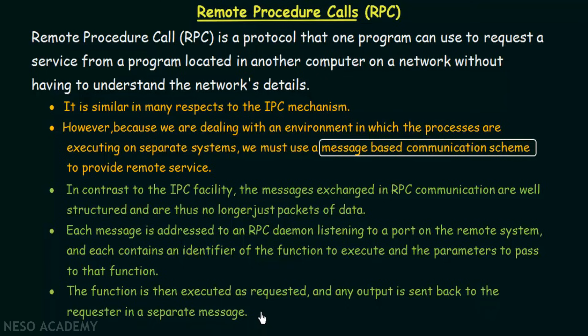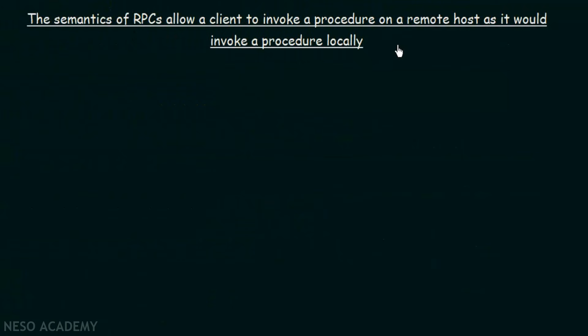When we call a function, we pass parameters, the function executes, and return values are sent back to where the function was called. In RPC, the caller is the client — the first process. After the function executes on the remote system, the return values are passed back to the client in a separate message using the message passing system. That is basically how RPC functions.